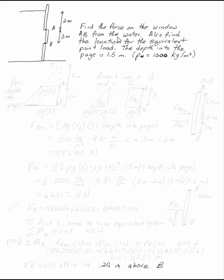Find the force on the window AB from the water. Also find the equation for the equivalent point load, where the depth end of the page is 1.5 meters and the density of water is 1,000 kilograms per meter cubed.